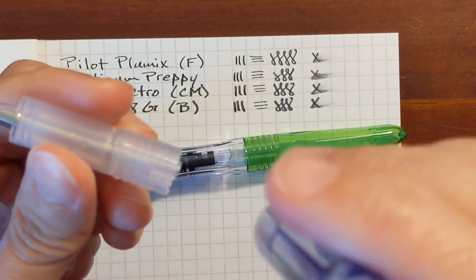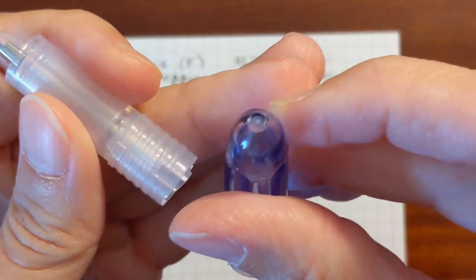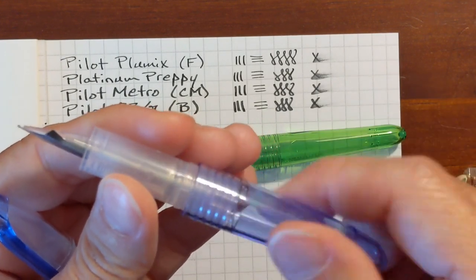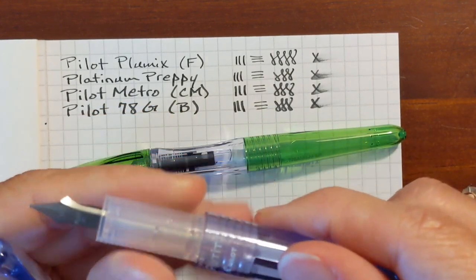It's got the same little divot on the bottom that the Petite One does.